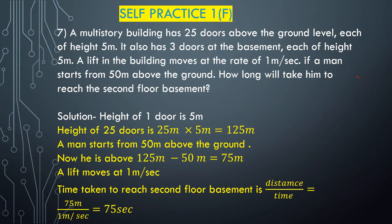Question number 7: A multi-story building has 25 floors above the ground level, each of height 5 meters. It also has 3 floors at the basement, each of height 5 meters. A lift in the building moves at the rate of 1 meter per second. If a man starts from 50 meters above the ground, how long will it take him to reach the second floor basement?